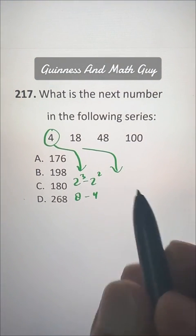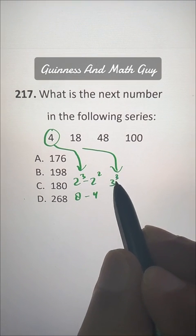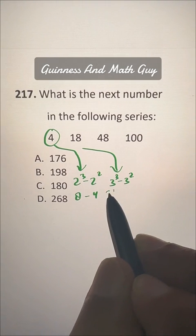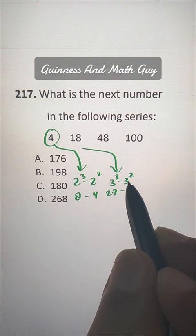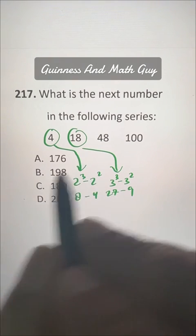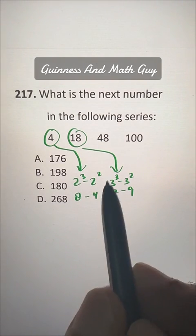This 18 is 3 cubed minus 3 squared. 3 cubed is 27, 3 squared is 9. 27 minus 9 is 18. Now you get the pattern.